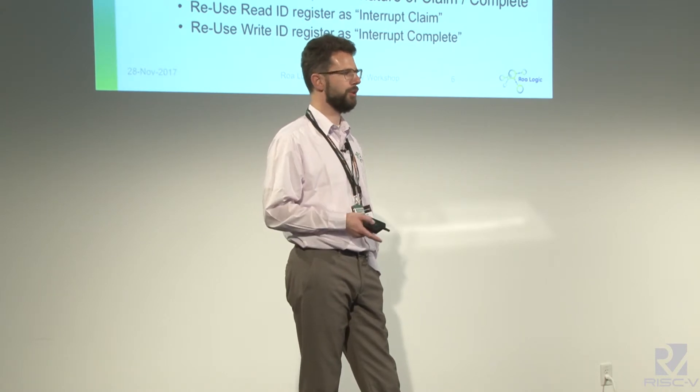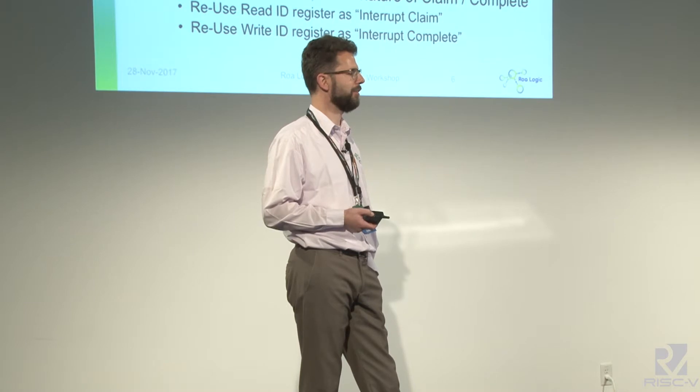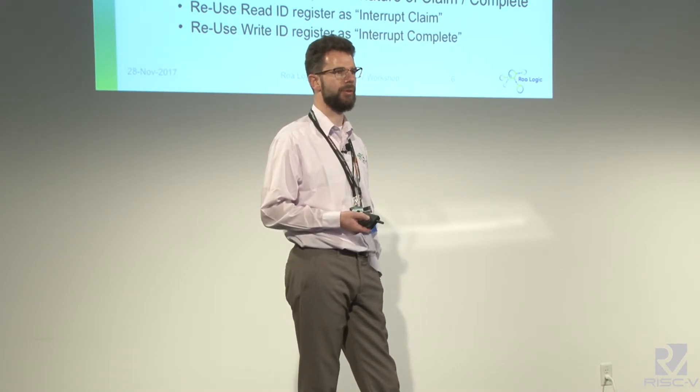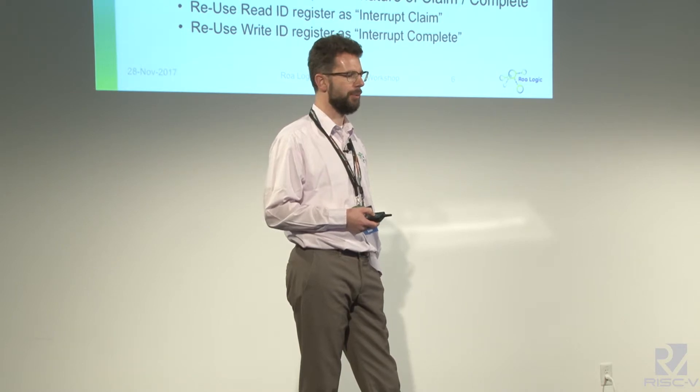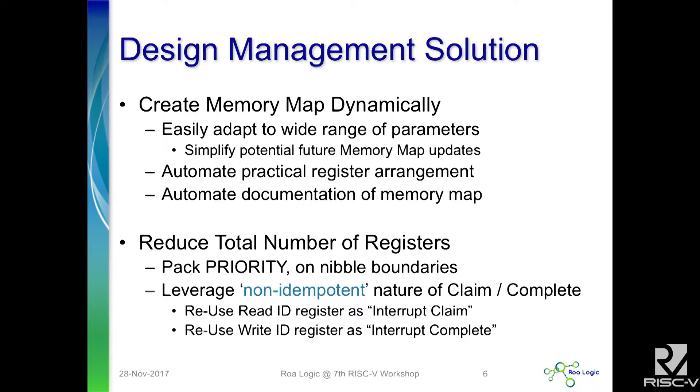In our implementation, as soon as a target gets notified that an interrupt is pending, it reads the ID register, which then automatically sets the claim as well. So as soon as a target reads ID, it also claims that particular interrupt. The ID register is then, contrary to what the spec says, automatically updated to show the next pending interrupt. When the ISR is ready, writing to the ID register — which is a dummy write — indicates that the interrupt is complete. It can then immediately read ID again to get the next pending interrupt, and if there's no interrupt pending, it reads a zero.